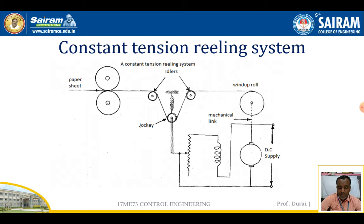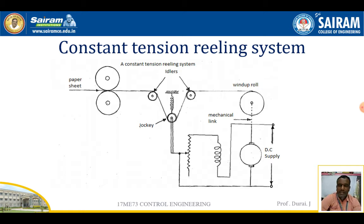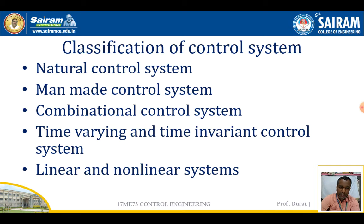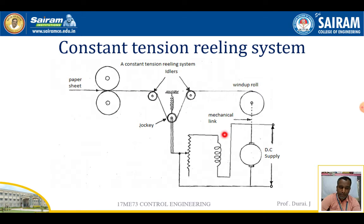We are going to discuss about automatically controlled industrial processes. We will see about the reeling system. In the paper mills, as you can see in this diagram, the reeling system shows the paper coming from here, passing over in between the rollers, going to the idlers, via the jockey, and winding up on particular rollers. It is connected by a motor.